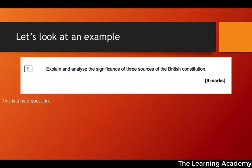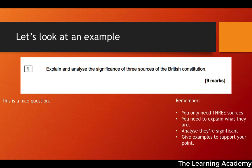So let's look at an example. We have a question from the AQA sample set: 'Explain and analyse the significance of three sources of the British constitution.' This is a nice question. Remember, you need three sources — three different sources of the British constitution. You need to explain what those three sources are, give examples to support your knowledge and explanation, and then analyse their significance — explaining why they're significant using your examples.